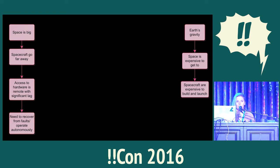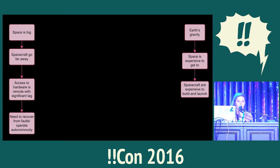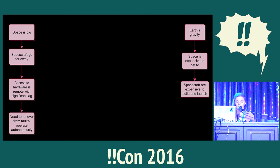Just to talk about some of the total costs: Discovery program missions, like Messenger, Mars Pathfinder, and Kepler, are a few hundred million dollars. New Frontiers missions, like New Horizons, are up to $700 million. And then flagship NASA missions — like Voyager, Mars Science Laboratory, and the upcoming Europa mission — are $2 to $3 billion.